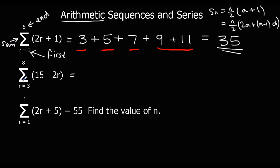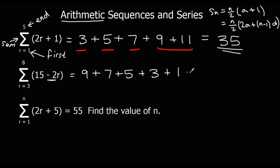So if we write them out, starting with r equals three: fifteen take away two threes — fifteen take away six is nine. And then fifteen take away two fours — this one's going to go down in twos. Then fifteen take away two fives, fifteen take away two sixes, fifteen take away two sevens, and fifteen take away two eights would be minus one. Adding them up: nine, seven, five, three, one, minus one gives us a total of twenty-four.